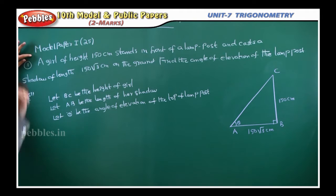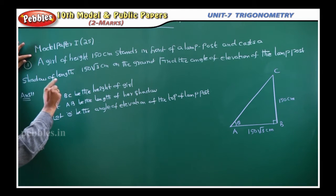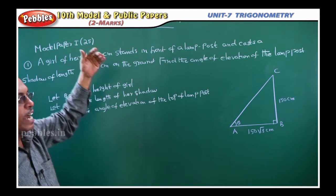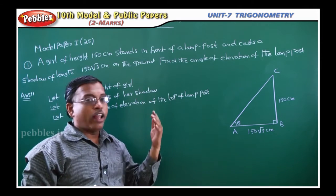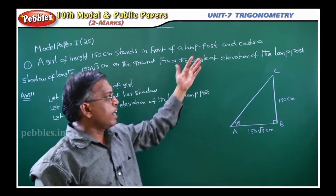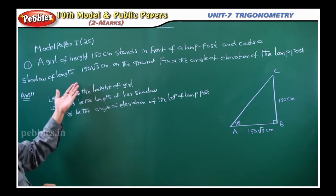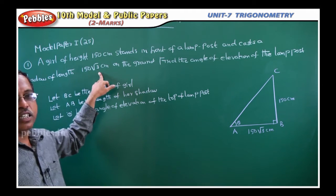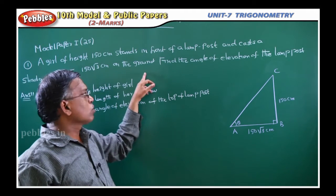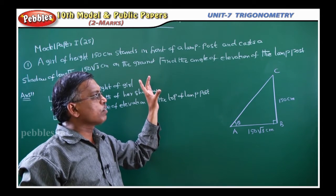Model paper 1, problem 25. A girl of height 150 centimeters stands in front of a lamp post and casts a shadow of length 150 root 3 centimeters on the ground. Find the angle of elevation of the lamp post.